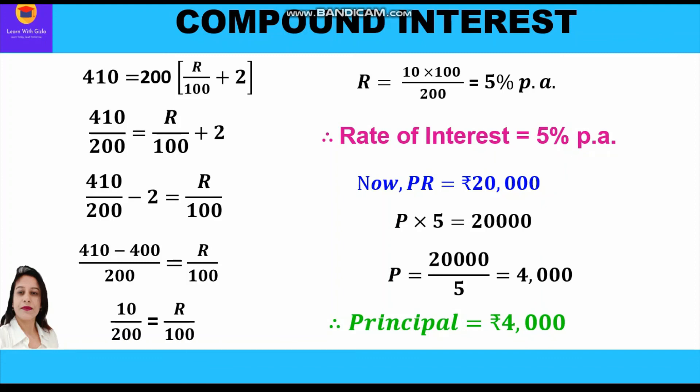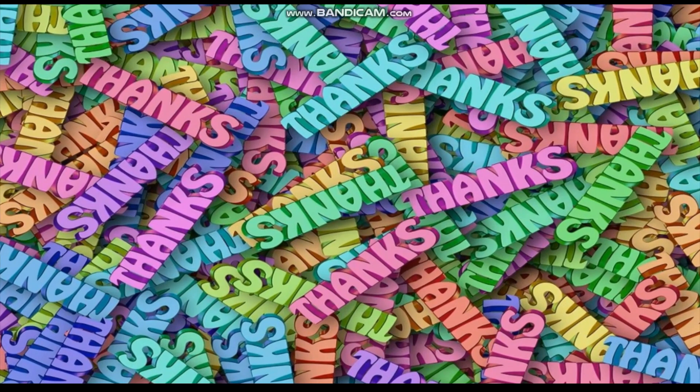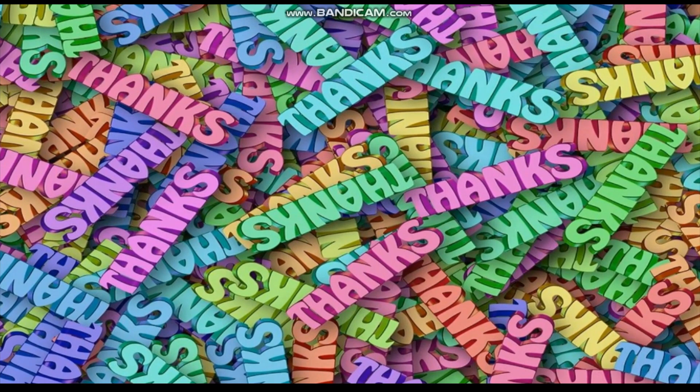So in this question we have calculated the rate of interest as 5% and the principal as rupees 4,000. Hope you have understood this question. Please do like and subscribe to my channel. Thank you everyone, have a good day.